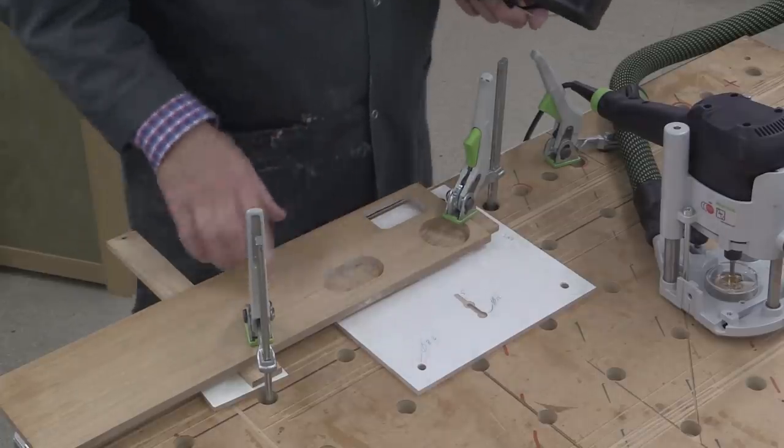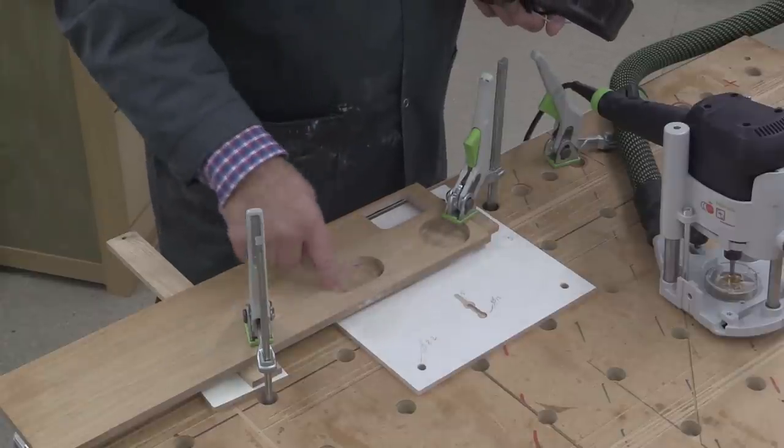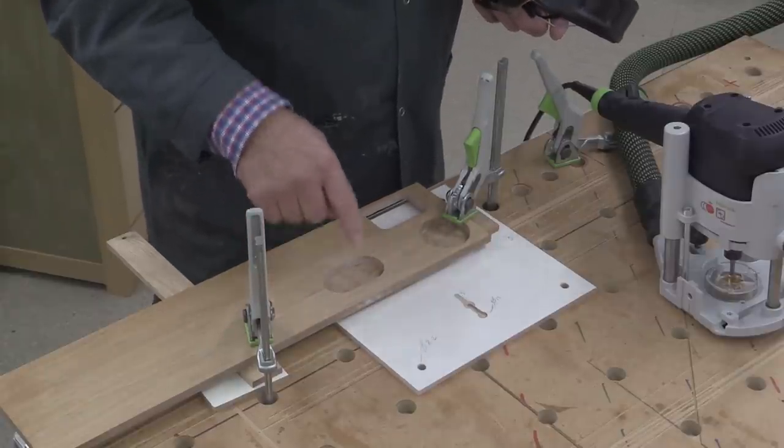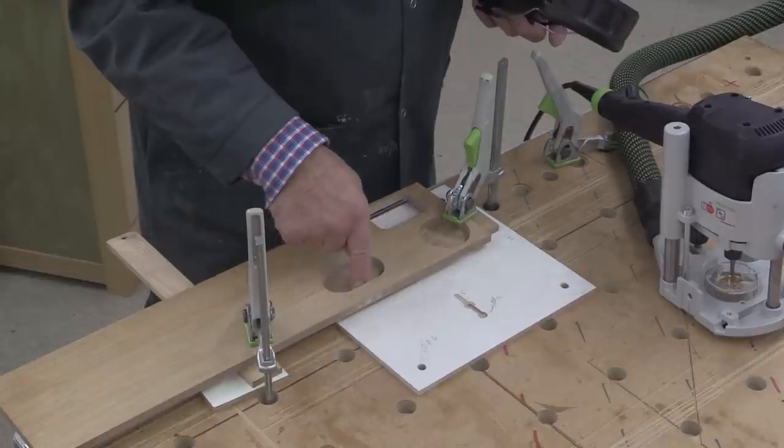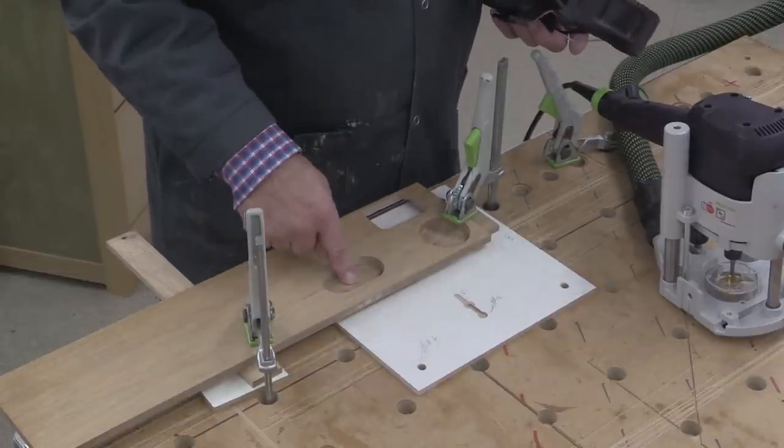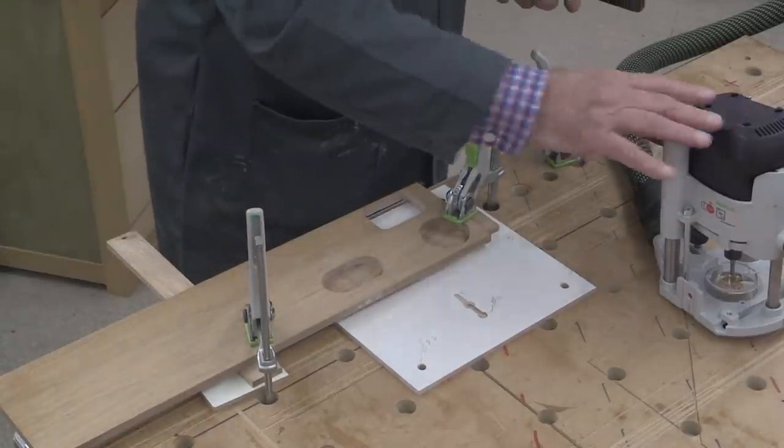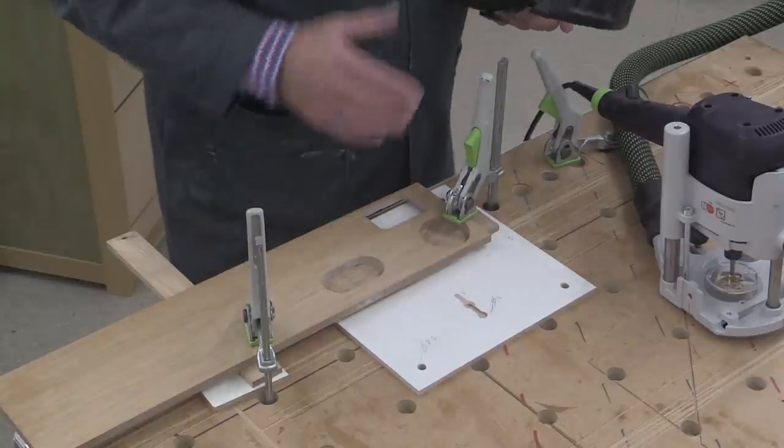I'm all set up to do this cut now. My template is held in place over the piece of wood I'm going to be doing the cutting from. Because this is a plug, the piece in the middle is held down with double-sided tape so it doesn't move at the very end of the cut. I've set my depth of the router and I'm all ready to go.